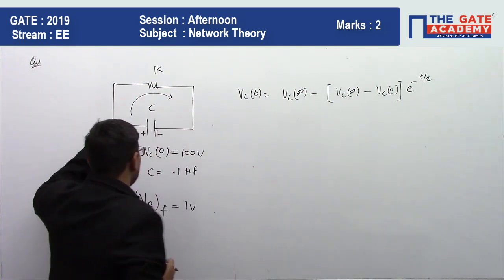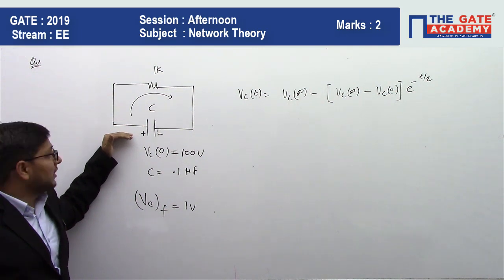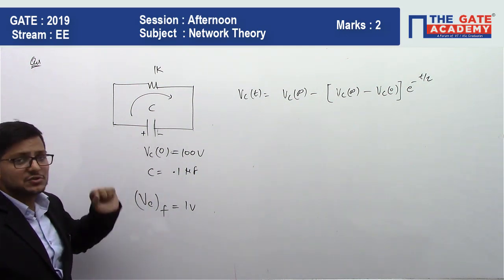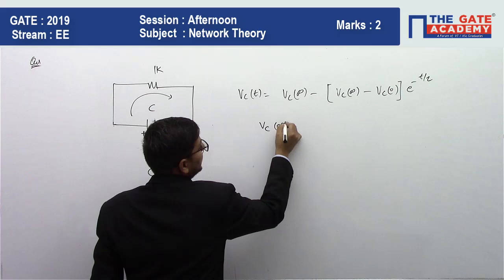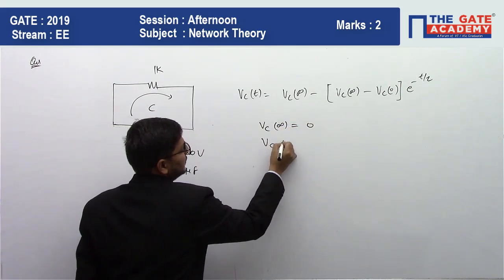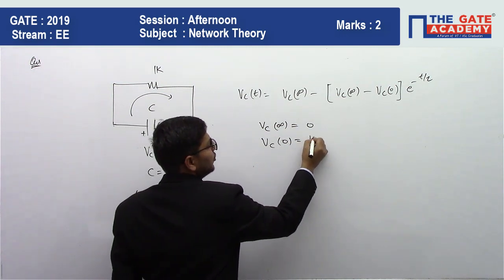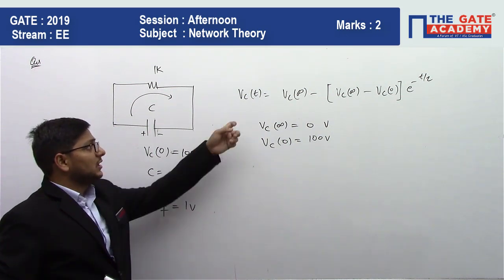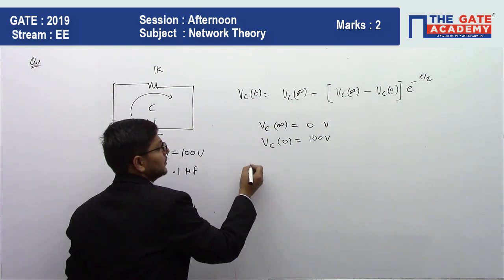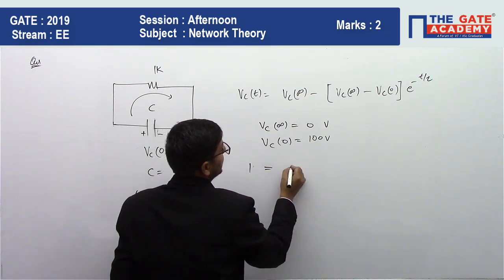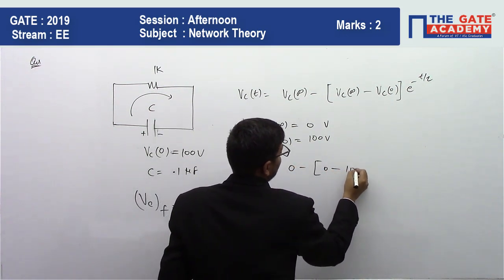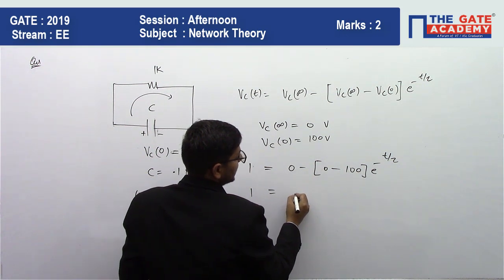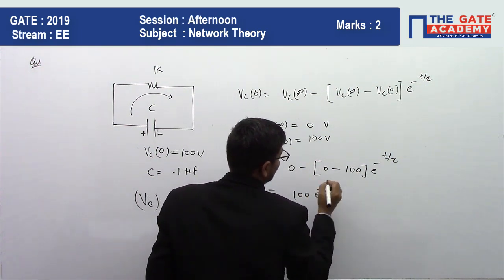At infinite time the capacitor will be fully discharged, so VC(∞) equals 0. And VC(0) is already given as 100 volts. The final value we require is VC(t) = 1 volt. Substituting: 1 equals 0 minus (0 minus 100) times e to the power minus t by tau, which simplifies to 1 equals 100 times e to the power minus t by tau, giving 0.01 equals e to the power minus t by tau.